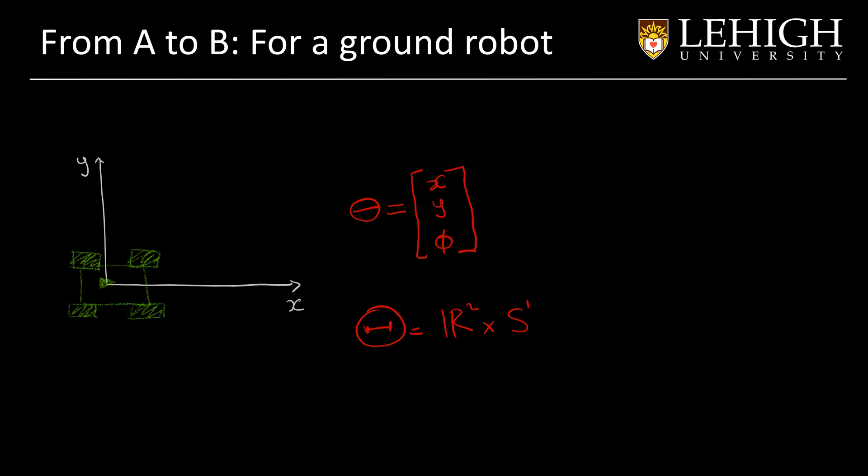We can get a flat version of the circle and we will represent it as the vertical dimension. This will be Phi.